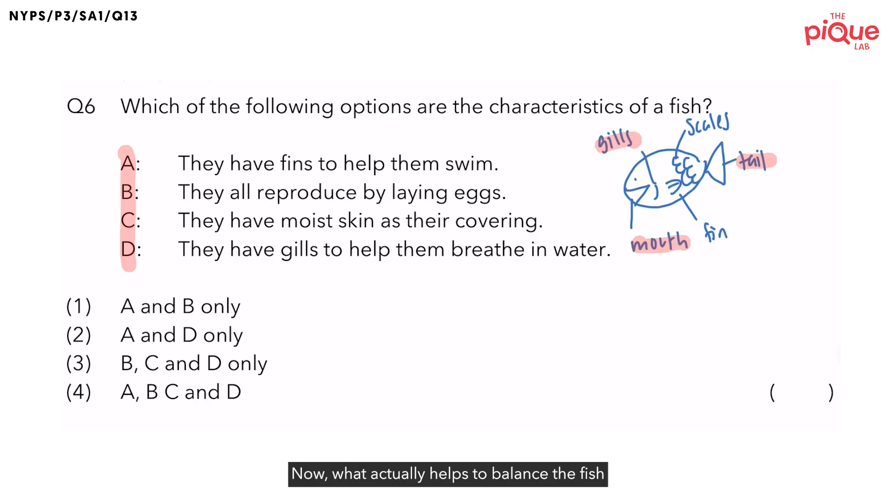Now, what actually helps to balance the fish and to allow the fish to steer from left to right? It's actually the fins of the fish. And last but not least, what is the outer covering of a fish? The outer covering of a fish is the scales, which helps to protect the fish from injuries.